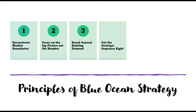The fourth principle is to get the strategic sequence right. This means ensuring the new business model a company adopts is commercially viable and profitable. Companies need to confirm that their new strategy is feasible, that a market exists in the new space, and that the right expected sequence is followed so that the new market — free of competitors — can be successfully entered.